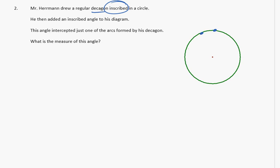So 1, 2, 3, 4, 5, 6, 7, 8, 9, 10. So those are the vertices of the decagon. Now I can actually draw in the sides. And there's my regular decagon.